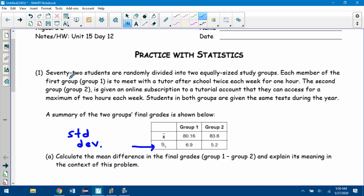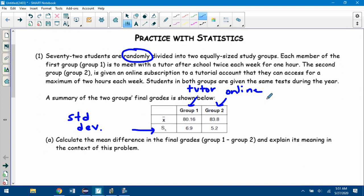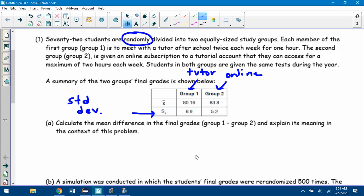The first symbol is the mean, and the second one, s of x, we don't usually use that one, but that is the sample standard deviation. So think of this as standard deviation if you see that. It might be helpful to say which is which. The first group is meeting with the tutor, so this is the tutor group, and this is the online subscription group. Notice even in the problem setup they say 72 students are randomly divided. Remember if you're setting up an experiment, you need to use random selection.